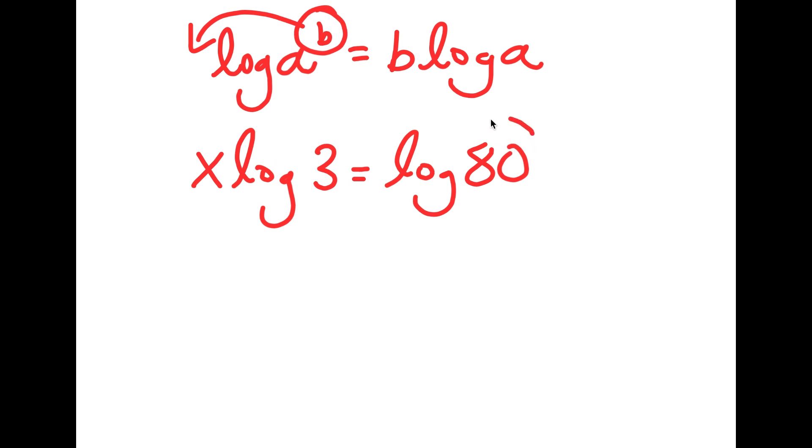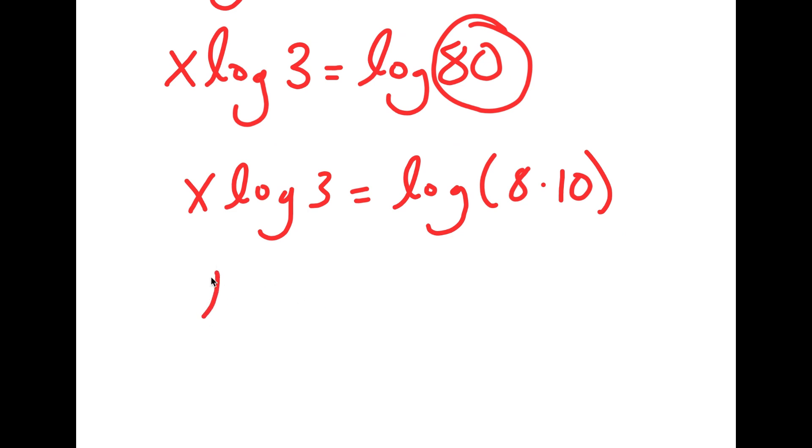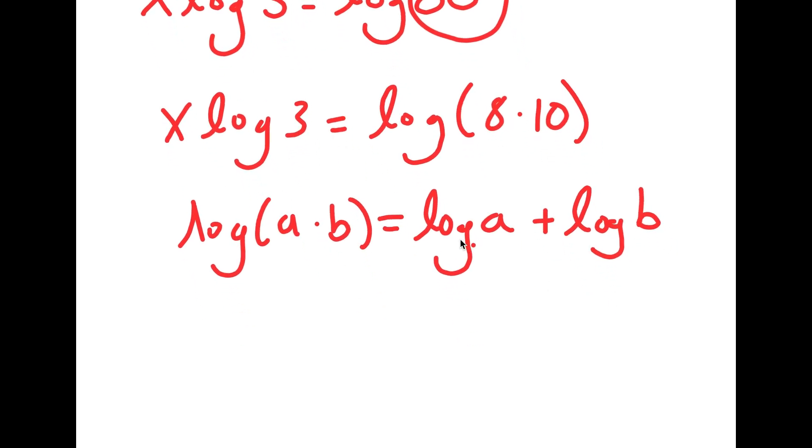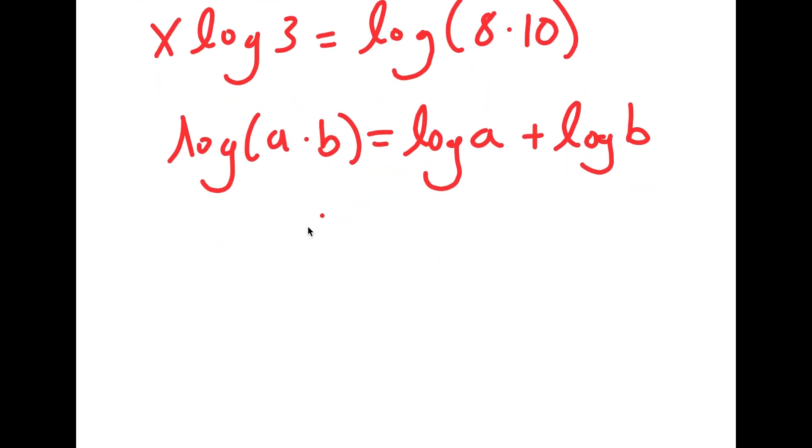Now from here, I'm going to rewrite 80 as 8 times 10. And if I have something in the form log a times b, this is equal to log a plus log b. And this is another one of the logarithmic properties.